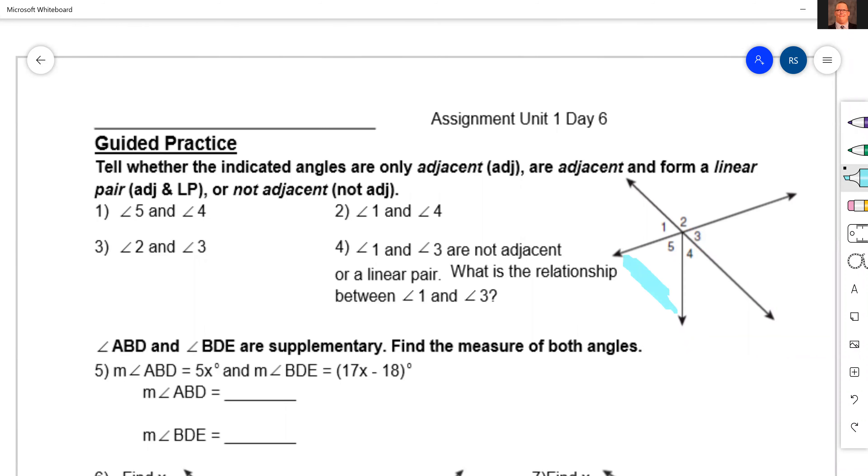So we have angle five right here and then it also asks us about angle four. To be adjacent they have to share a side. Do they share a side? Yeah, I'd say so, they're adjacent. Now the side they don't share, does it make a line? No, it doesn't, so these are just adjacent.